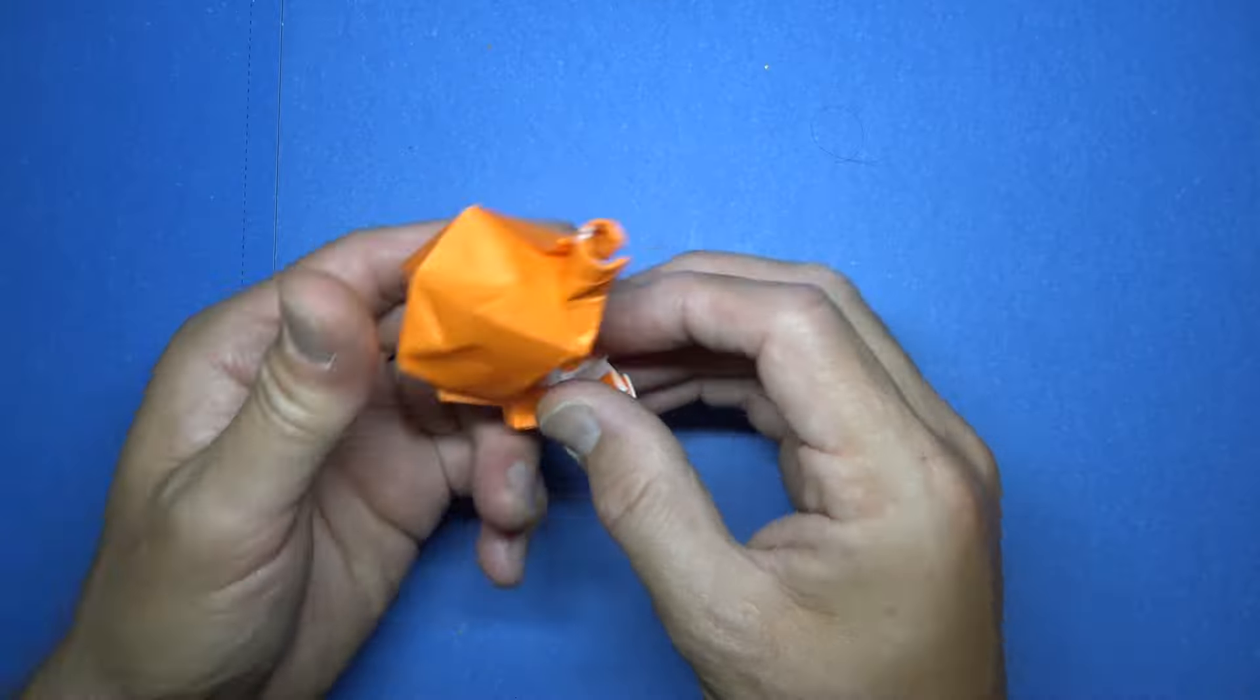And now fold these two corners to the crease. Unfold. And fold this edge to the crease. And repeat. So the flaps will overlap.